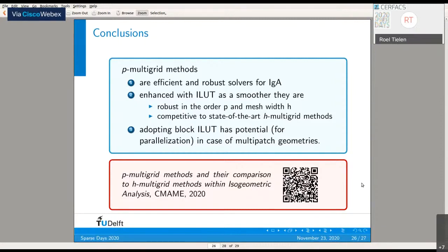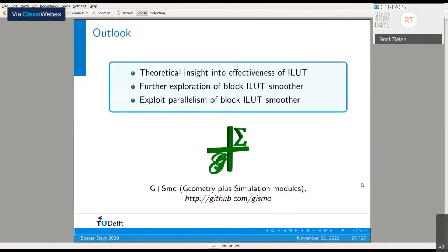If you're interested and want to read more, I'd like to refer to our paper, which was recently accepted. You can Google it or use the QR code on the slide—it will bring you directly to the webpage. Some short outlook: we'd like to get more insight into why this ILU(T) smoother is so effective. We mainly want to further explore the block ILU(T) smoother to see how we can exploit parallelism and apply it to more benchmark problems. Finally, all these numerical examples were produced using Gizmo, a C++ library specifically designed for isogeometric analysis. With that, I'd like to conclude my talk. Thank you very much for your attention.